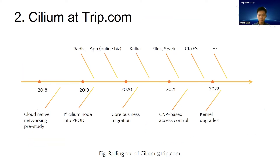This is a simple timeline of our Cilium rollout process. We started investigating cloud-native networking in 2018, and our first Cilium node rolled into production in 2019. Since then, all kinds of our business and infrastructure began to migrate to Cilium transparently. In last year, with most online businesses already on Cilium, we started a security project based on Cilium network policy.